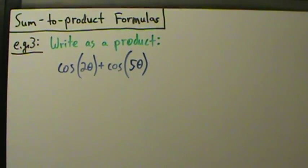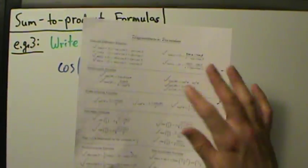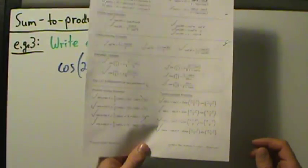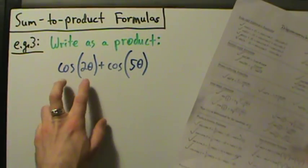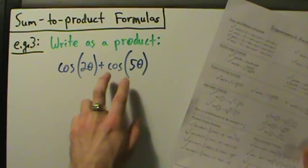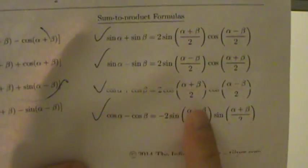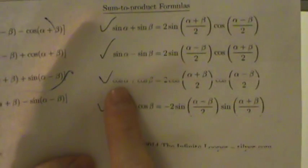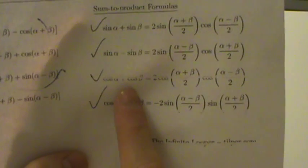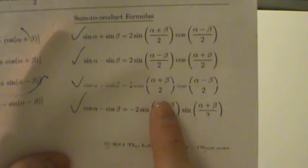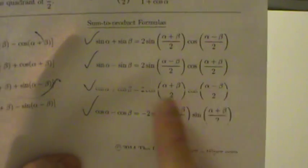We go back to our formula sheet — if you want a copy, check the video description for a link. Here's cosine of something plus cosine of something else, so we're going to use this sum to product formula. It's cosine alpha plus cosine beta equals two cosine of (alpha plus beta) over two times the cosine of (alpha minus beta) over two. That's the formula we're going to use.